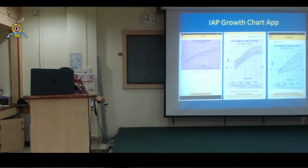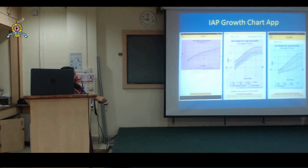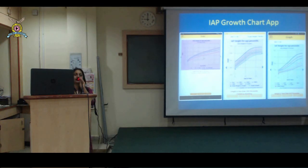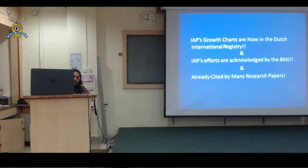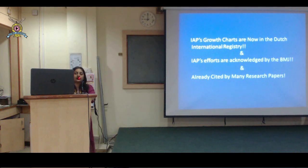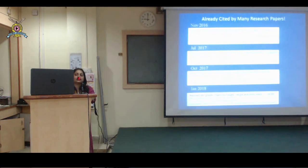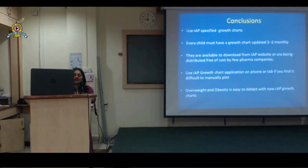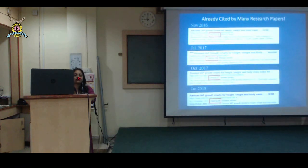The app also interprets height for age above 5 years using the IAP growth chart. Similarly for weight, interpretation is given - everything is at the click of a button. These charts are so well made that the IAP's growth charts are now in the Dutch International Registry. IAP's efforts are acknowledged by the BMJ, already cited by many research papers, with citations increasing day by day - the number of citations used by researchers was 77.